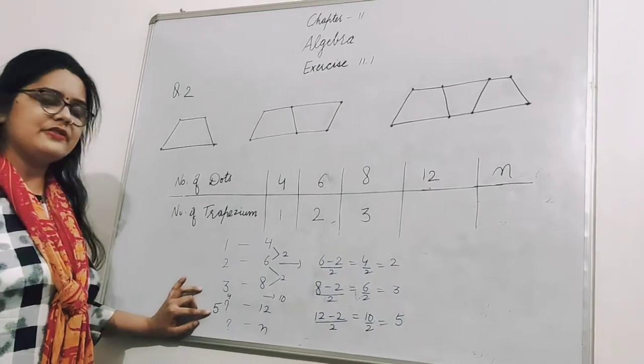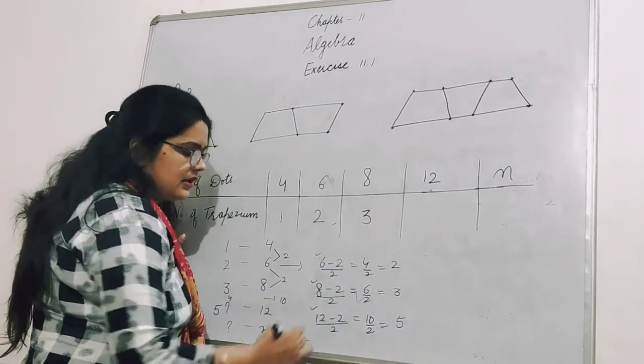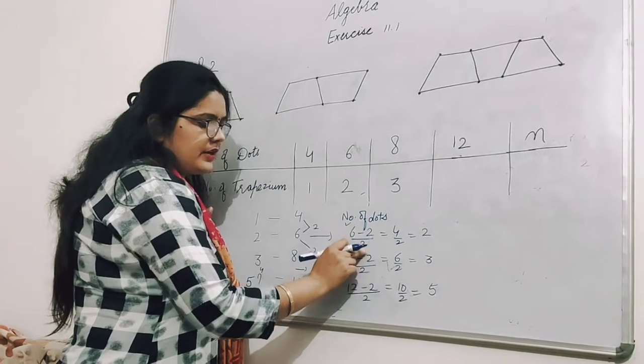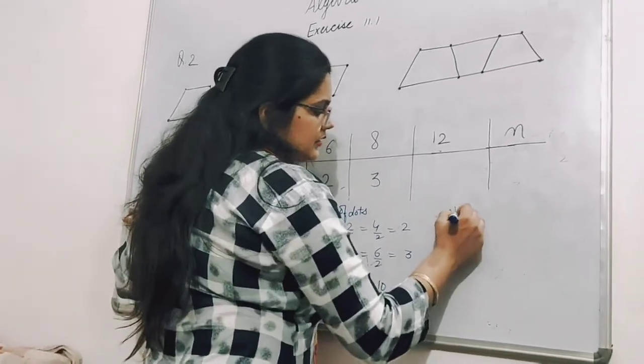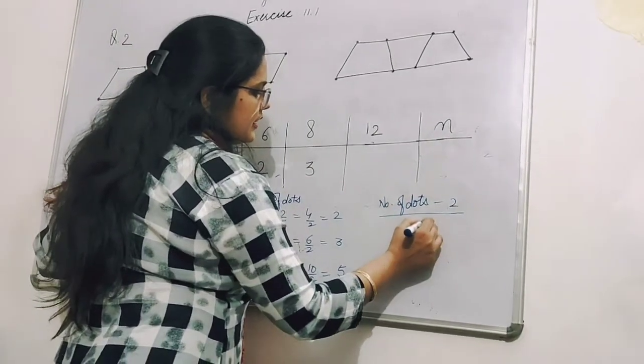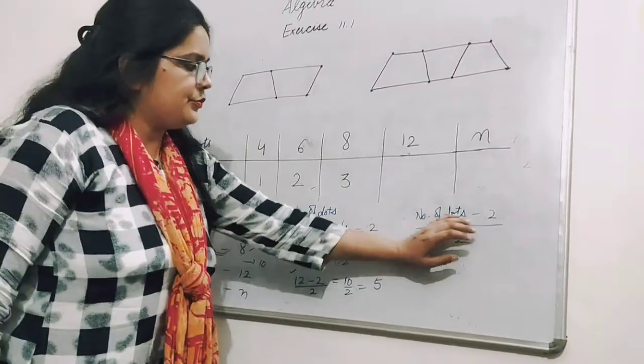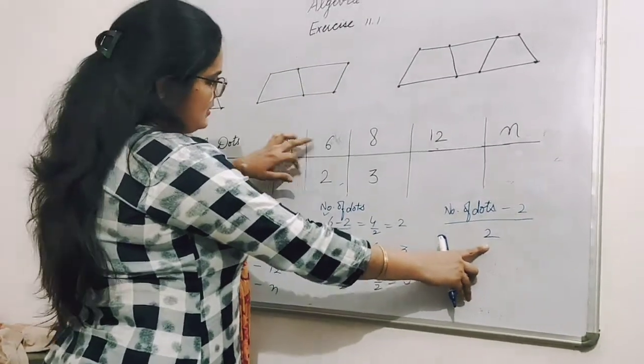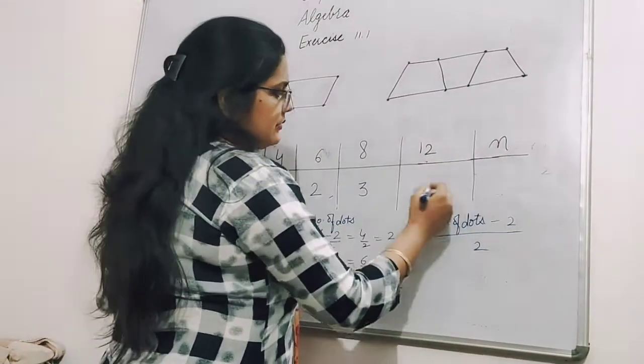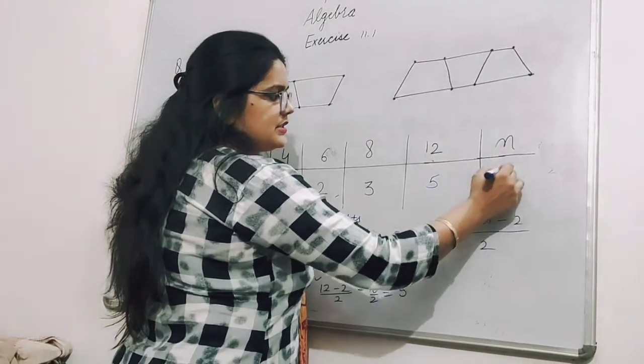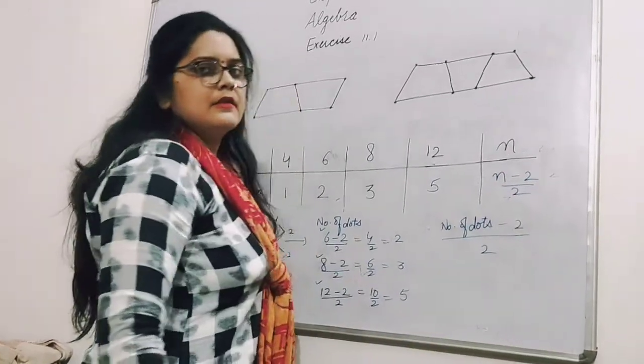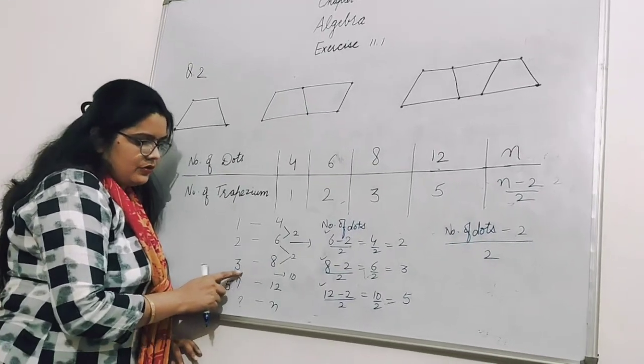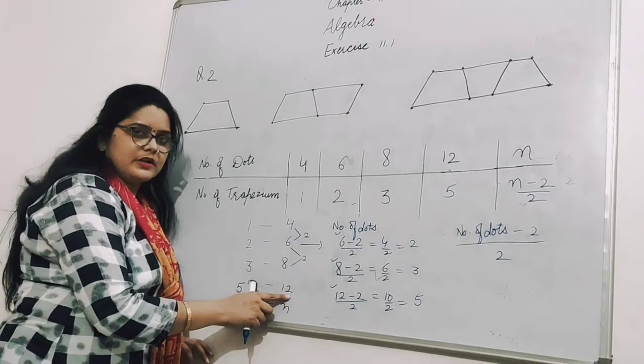Let's generalize this. This is our number of dots. We minus 2 and divide by 2. So our general term becomes: (number of dots - 2) divided by 2. When we put values in this, we get the answer. 4 dots: (4 - 2) divided by 2 equals 1. I showed you 6, 8, and 12.